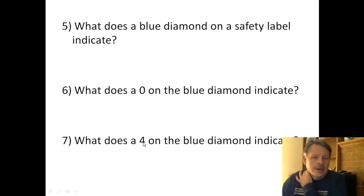What does a blue diamond indicate? Well, a blue diamond indicates a health hazard. If you have something that has a zero on it, then it is not a health hazard. But something with a four on it would be extremely toxic, extremely poisonous. So this is something that again you would not want to play with. A zero means that it's safe and won't hurt you, but a four means that it is potentially toxic.